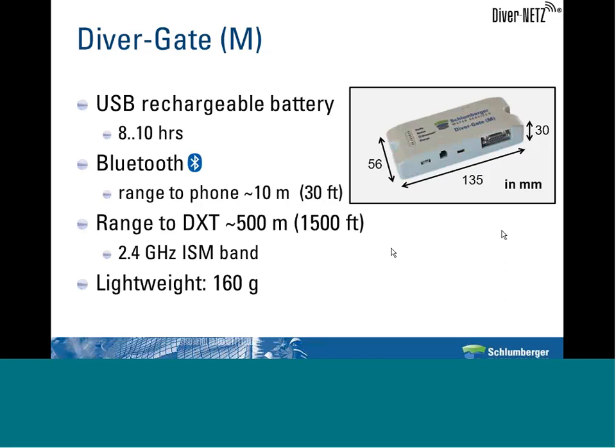The range from the DiverGate M to the DXT is up to 500 meters or 1,500 feet. We use the 2.4 GHz ISM band—ISM stands for Industrial, Scientific and Medical—which is a worldwide free band for transferring Diver data. The DiverGate M is also fairly lightweight at 160 grams.